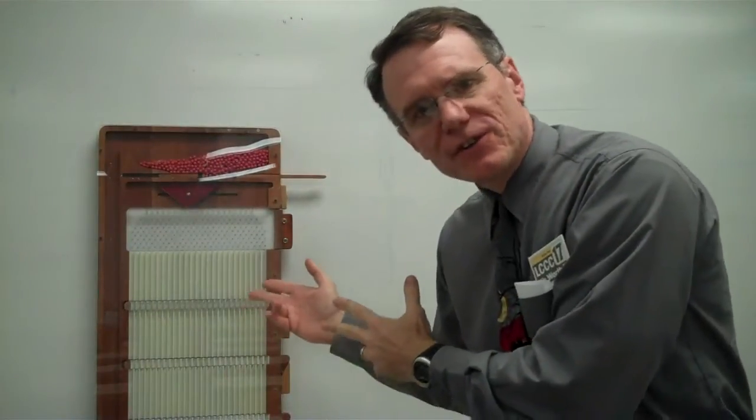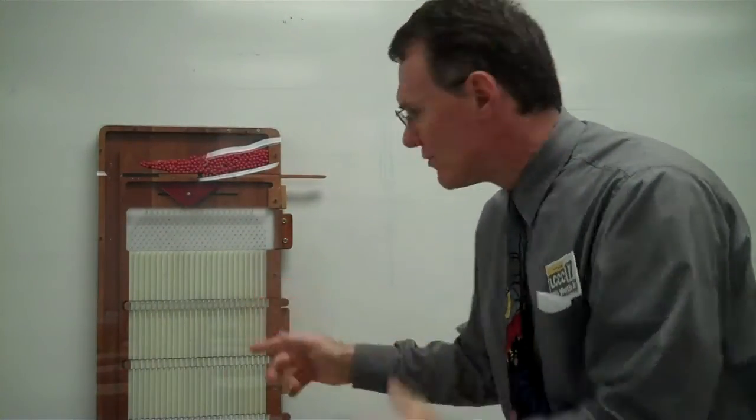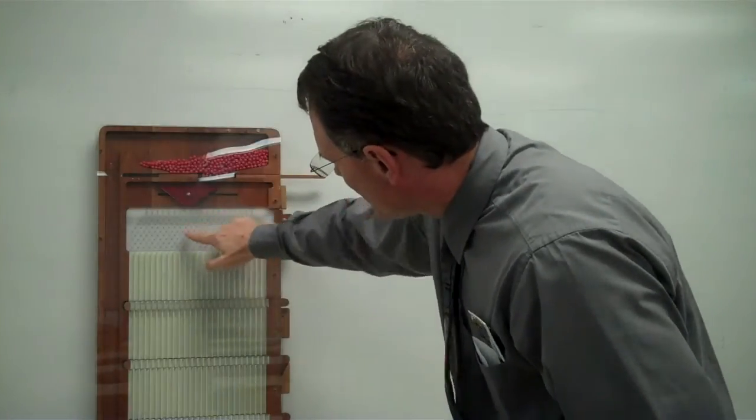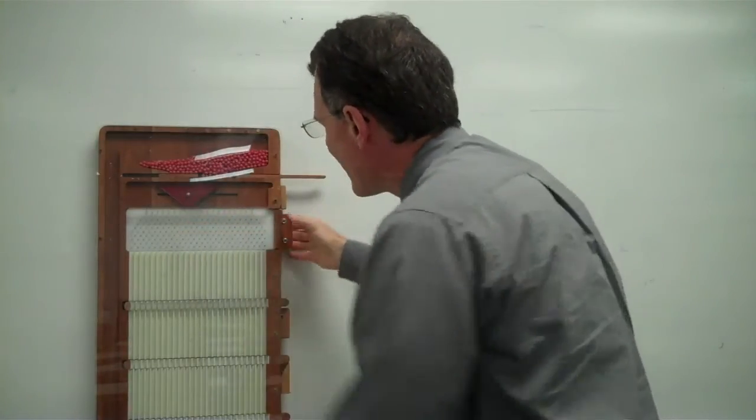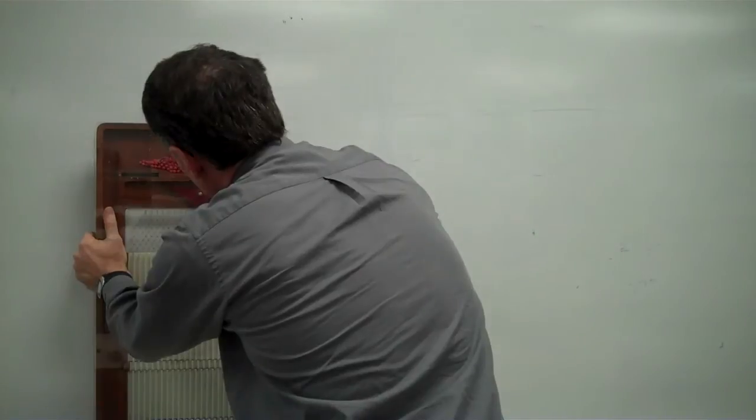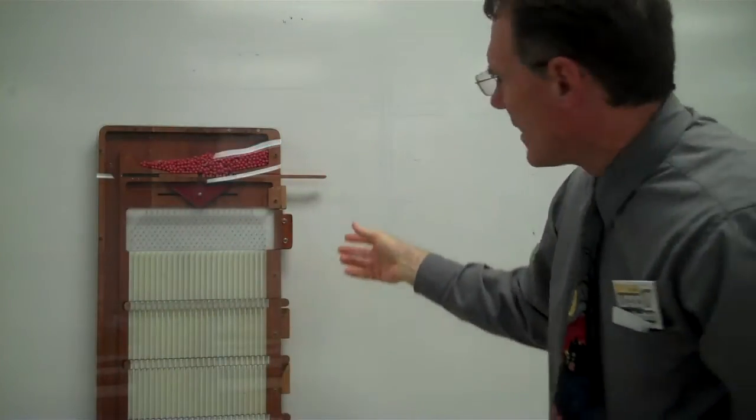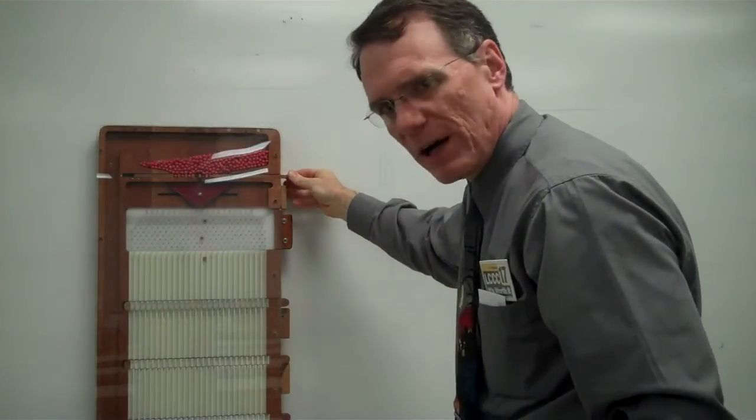This pachinko-like device is called a quincunx. It drops beads down and uses these spikes to randomize the way they land and introduce variation, simulating variability in an industrial process.